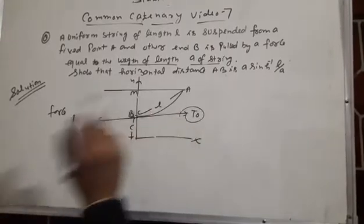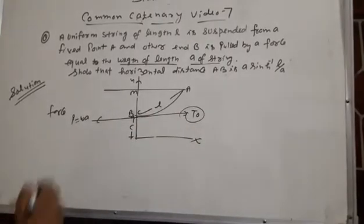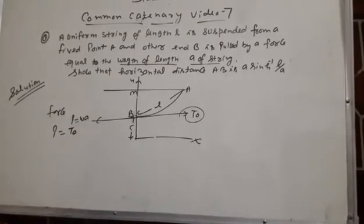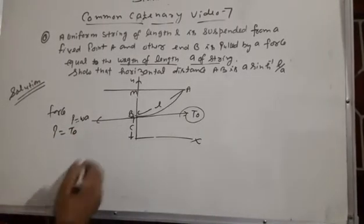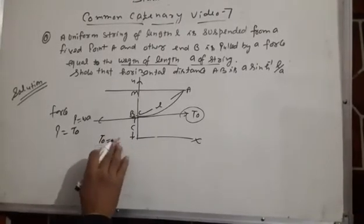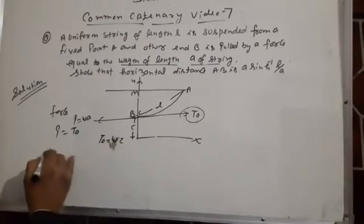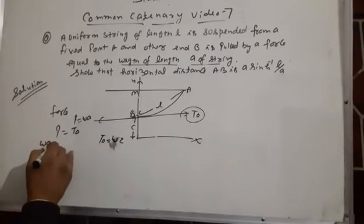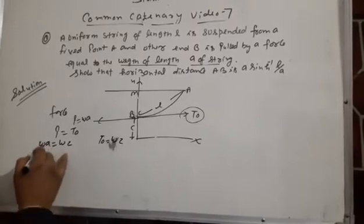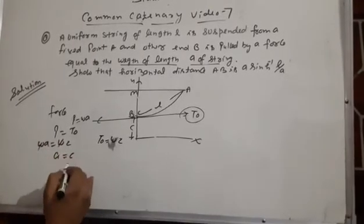In the vertical direction, T₀ equals P, and T₀ relates as T₀ = wc. Since P is given as wa, we have wa = wc. Canceling w gives a = c.